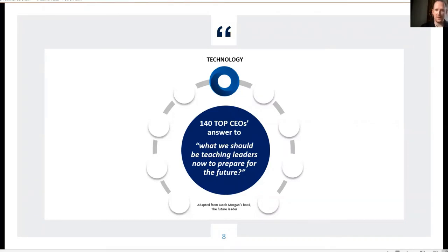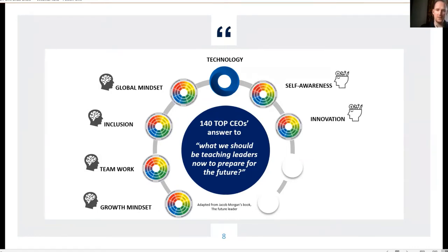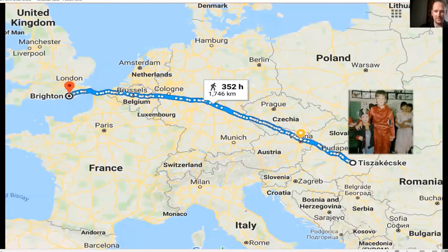89% of leaders think staff leave for more money, but that's only 12% of them. 75% of employees leave managers, not companies. The people who stay cost 34% more in terms of disengagement. Jacob Morgan asked 140 top CEOs what we should be teaching leaders now. He came up with four mindsets and five skills. One was technology. The other eight are directly connected to understanding people, not just others, but ourselves.